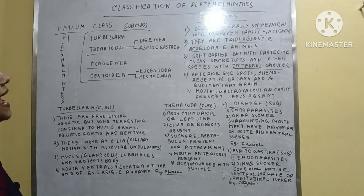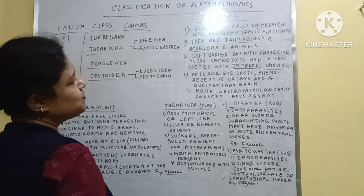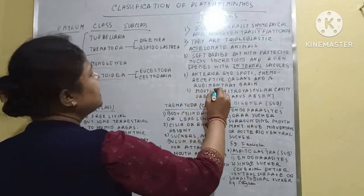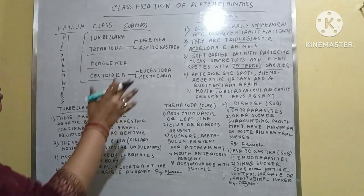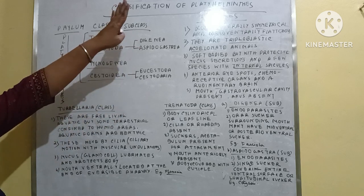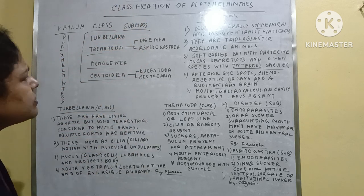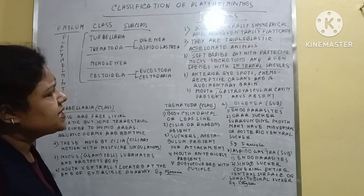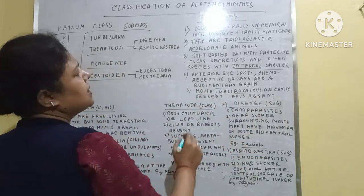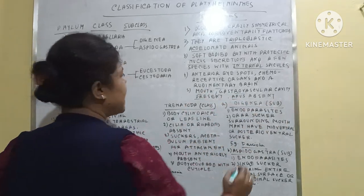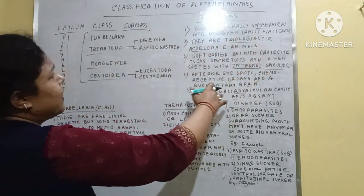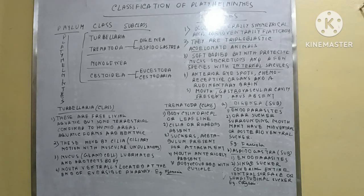The fourth feature is the presence of anterior eye spots, chemoreceptive organs, and a rudimentary brain. The fifth point is that a mouth and gastrovascular cavity are present, but the anus is absent. Under this phylum, there are the classes.